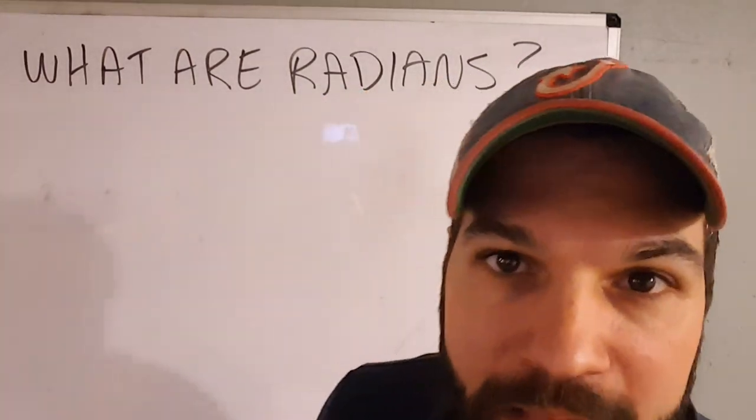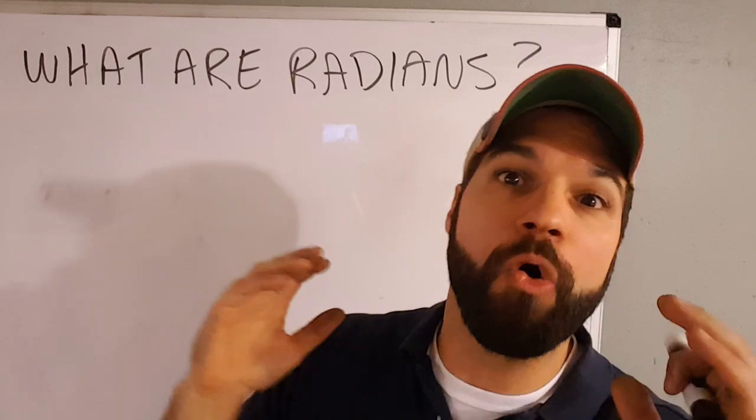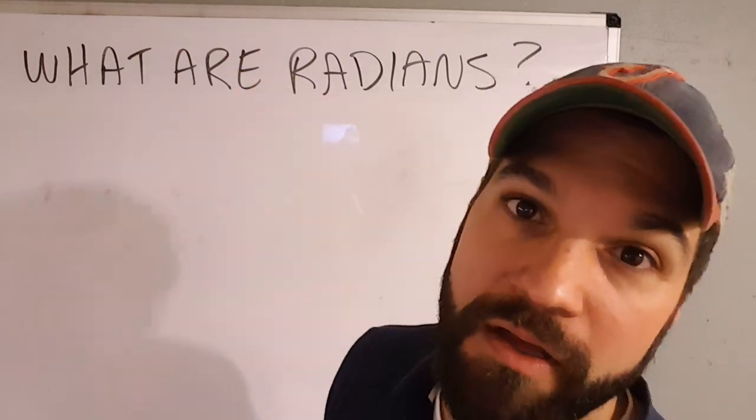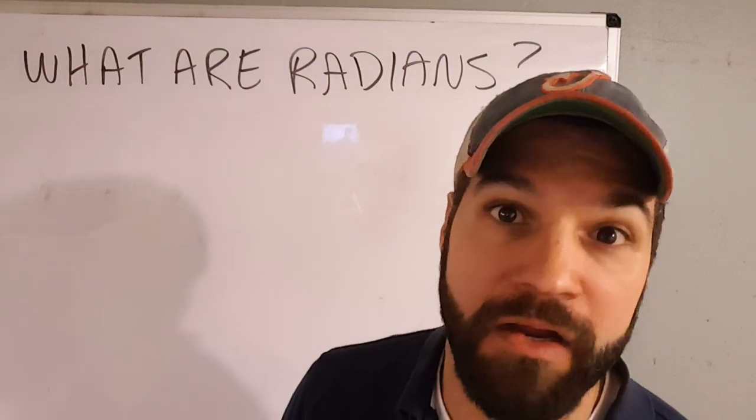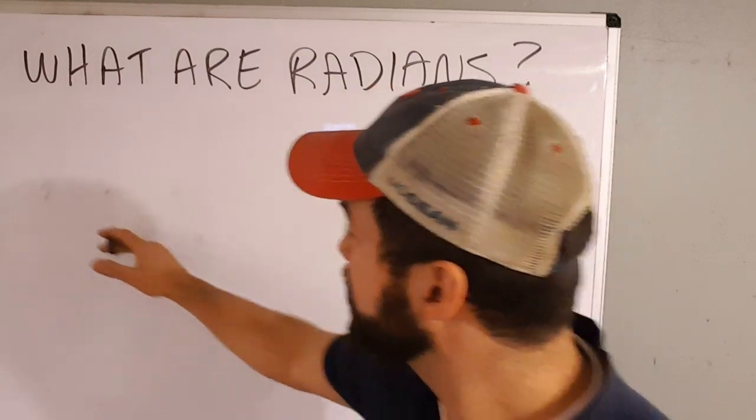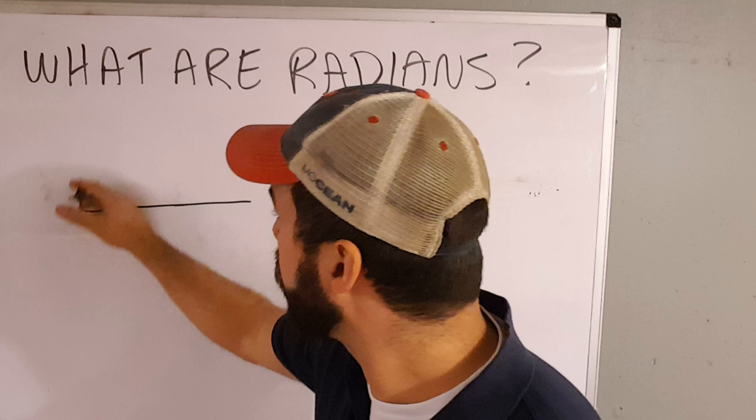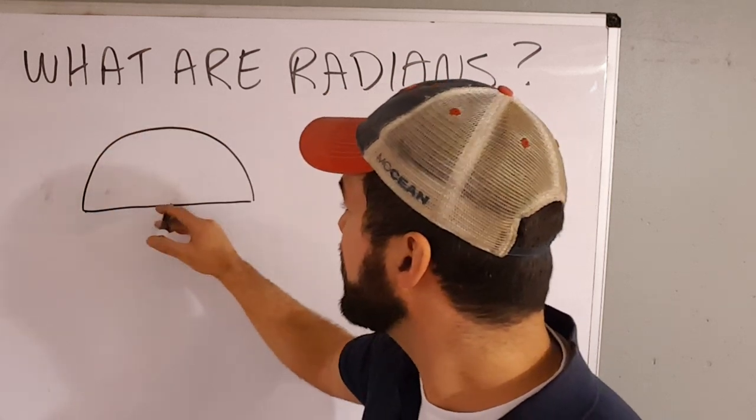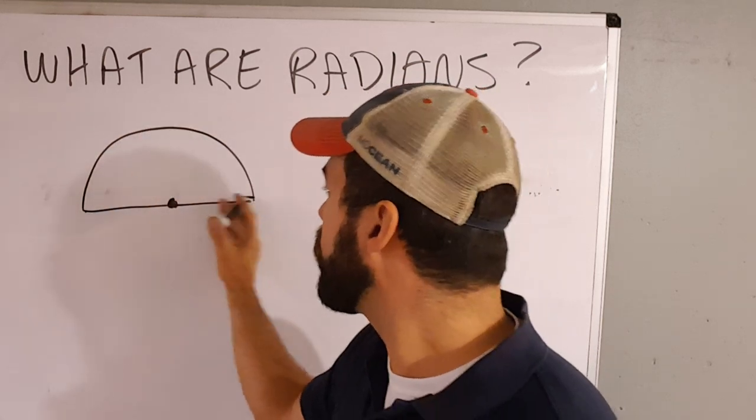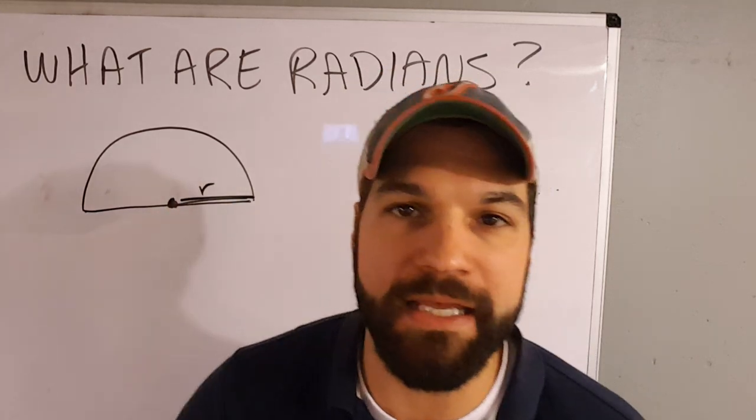Instead of a whole diameter, instead of a whole circle, I'm going to take half a circle. Instead of a whole diameter, I'm going to take half a diameter. So let's look at a half circle. Here's a half circle, and here's half of a diameter. That's called a radius.